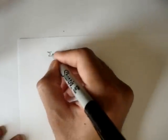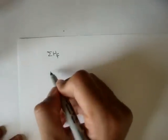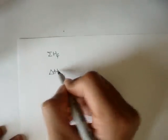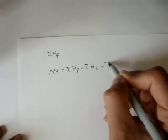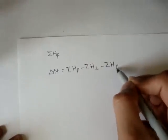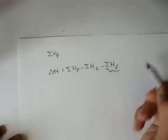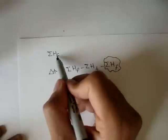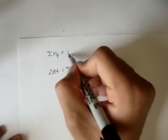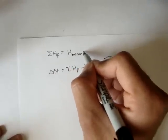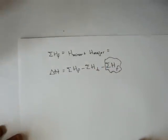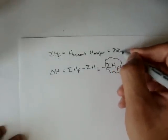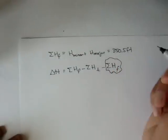And in the last video we found that the summation of all the frictional head losses in the formula, so we found this in the last video, and remember that was the H minor plus the H major. And that total was 350.5 feet.